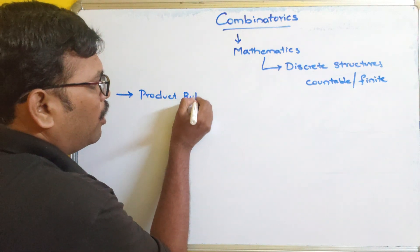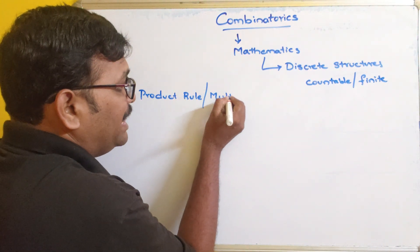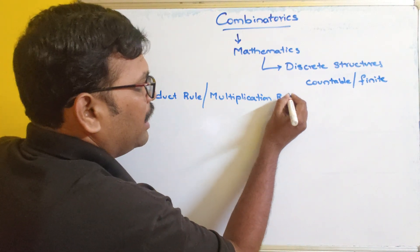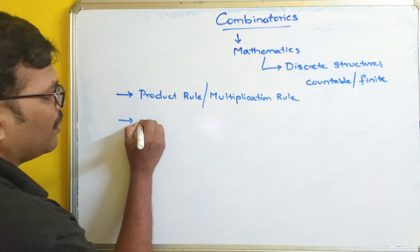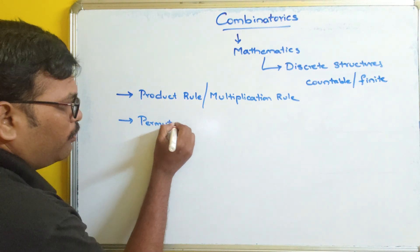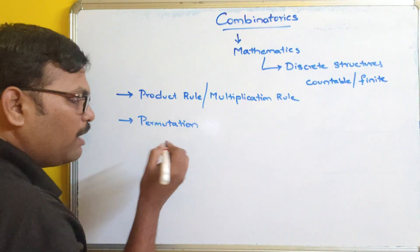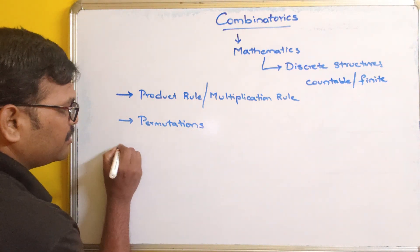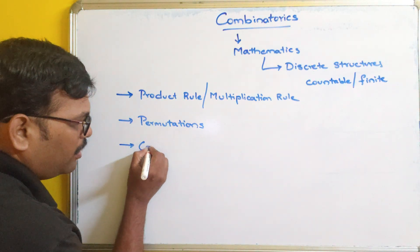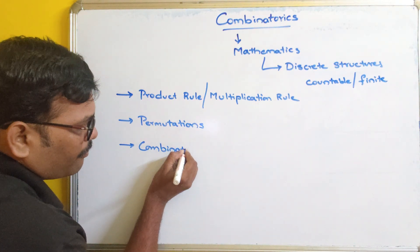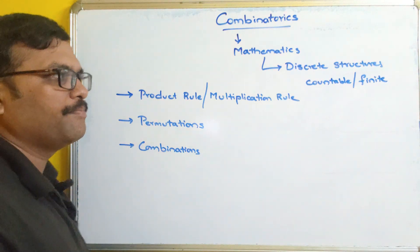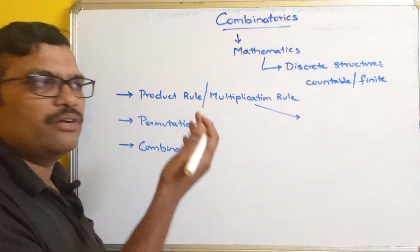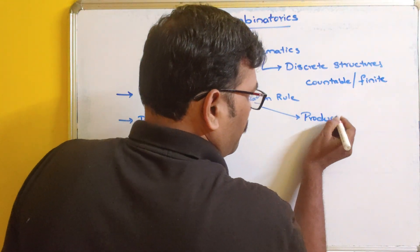The product rule is also called the multiplication rule. The second concept is permutations — you may have heard of permutations, and if not, no problem, we will solve them. The third concept is combinations.